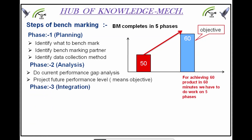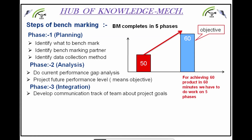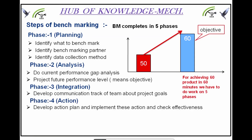Phase 3 is Integration. Develop a communication track of the team about project goals — how to communicate about the project work, when to do reviews, and how to conduct meetings with the team. Phase 4 is Action. Develop an action plan and implement the phases. After extracting all data and identifying gaps, you create an action plan to close those gaps, implement it practically, and check its effectiveness.